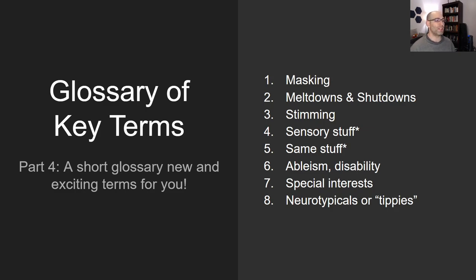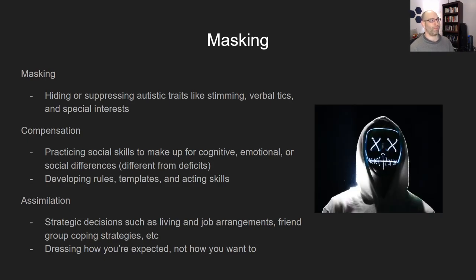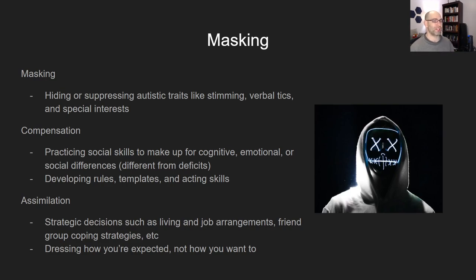Part four: glossary of key terms. If you're new to autism, there's a whole litany of terms you're probably going to find. First is masking — also sometimes called camouflaging. You can take the CATQ test on the Embrace Autism website. Masking is a broad category with three subcategories. The first is masking itself: hiding or suppressing any autistic traits so that you appear more neurotypical — things like stimming, verbal tics, special interests, facial expressions, and so on.